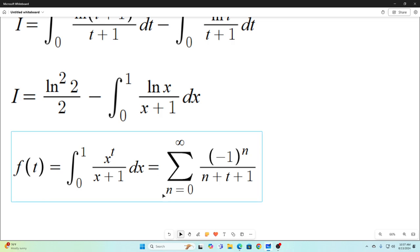Now, that integral can be represented by this sum. Basically, all you do is use the Taylor series representation for 1 over x plus 1, replace 1 over x plus 1 with it, bring the x to the t inside the sum, switch the summation and integration notations, evaluate the integral, and this is what you're left with.